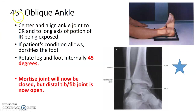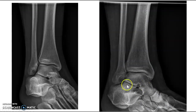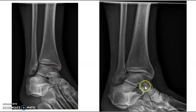Your textbook identifies a 45-degree oblique ankle — we don't use this routinely at our site, but it can be on your boards. The 45 degrees is used to open the distal tibial-fibular joint, but it will close the mortise side. If your mortise is over-rotated, it's going to look like a 45. If you went 45 instead of 15 to 20, the mortise will be closed on that side. These two examples show a closed mortise at 45 degrees with toes dropped — an excessive oblique that is not a mortise.